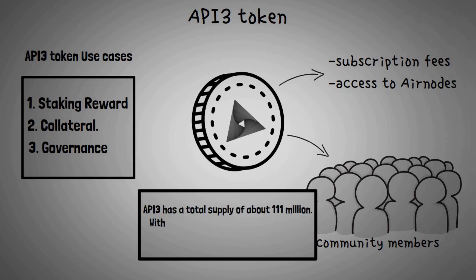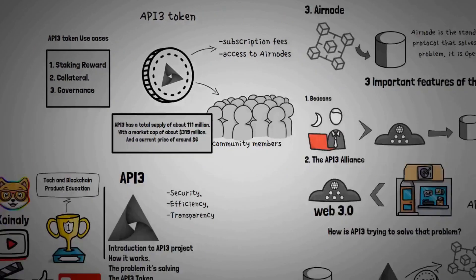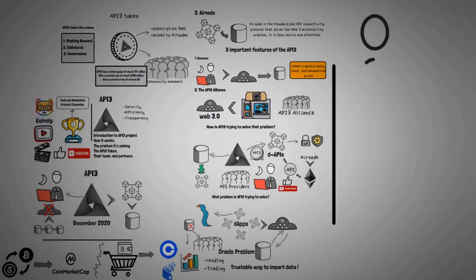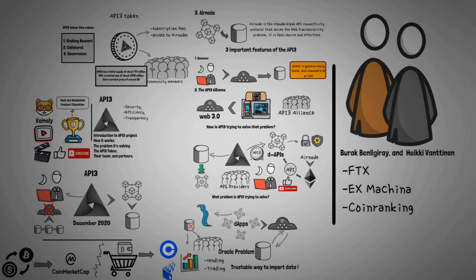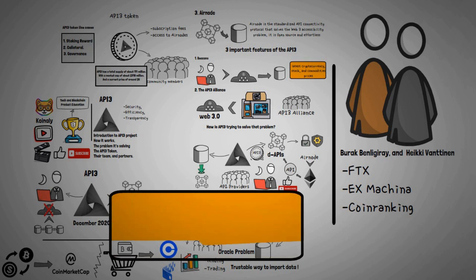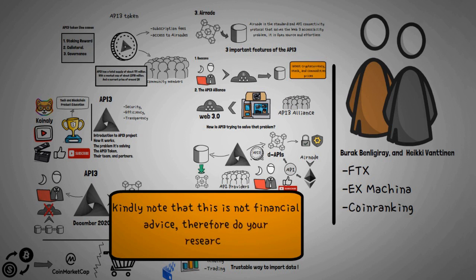API3 has a total supply of about 111 million with a market cap of about 319 million dollars. API3 is founded by Burak Benligiray and Heikki Vänttinen, and the project is currently providing services for some major players such as FTX, X Machina, and CoinRanking. Many people think that API3 is trying to be Chainlink's killer; however, Chainlink isn't doing anything to transition to first-party oracles, therefore API3 still has a lot of room to grow as their approaches are different.